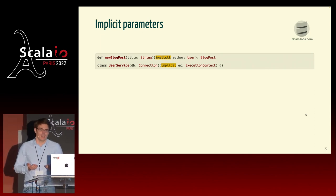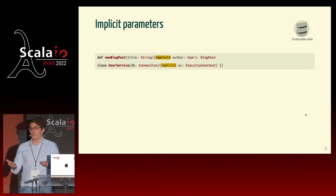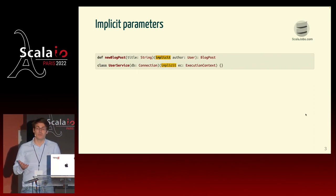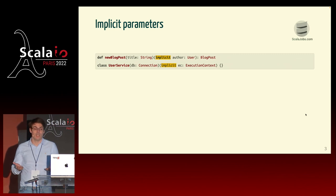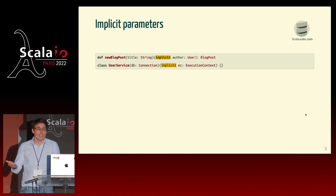First, the keyword implicit is used in different places, and it does different things. So when you see an implicit, you don't really know exactly what it does — at least when you first join Scala, you're like: what is it doing exactly? The second thing is that implicit is a feature that is very specific to Scala.